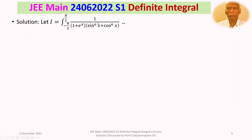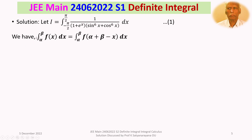Let us call the given definite integral as I — this is equation 1. We recall a formula: the integral from α to β of f(x) dx equals the integral from α to β of f(α + β − x) dx, under the given ideal conditions. We apply this formula to evaluate this integral.